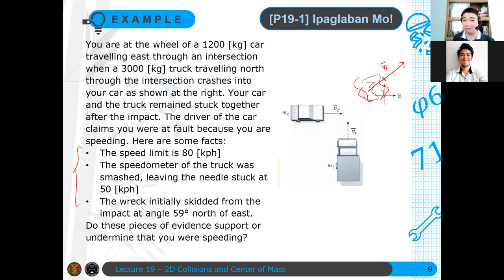Here are the facts that were found in the field when it was investigated. First, the speed limit of a car is 80 kph. Therefore your speed should be less than 80 kph to say you're not over speeding. Otherwise, you're over speeding. Now, the speedometer of the truck was smashed, leaving the needle stuck at 50 kph.